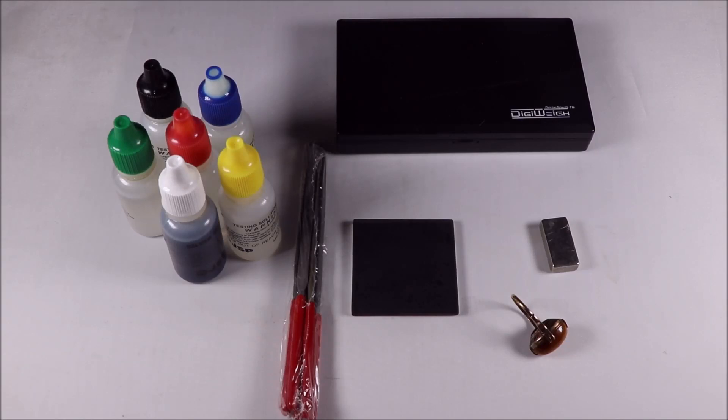Okay, so here are the typical items you'll find in a gold testing kit, pretty much everything you need to start testing your own jewelry. A couple of things we have: testing acids, files, a slate tile, a magnet, and a scale.